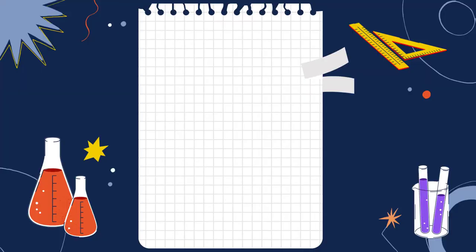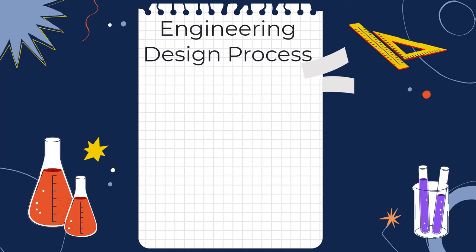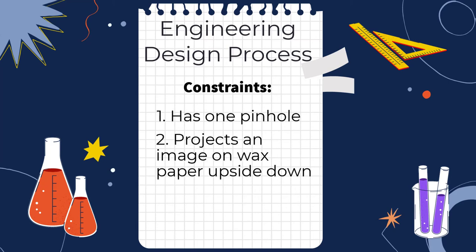Students should use the engineering design process to design and build a pinhole camera that meets the following constraints or rules. First, it has only one pinhole to receive light. It must project an image on wax paper upside down that works without being touched or, in other words, needs some kind of handle, and only uses the materials that you provide.